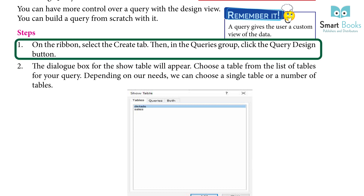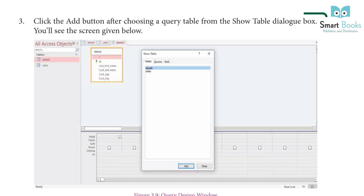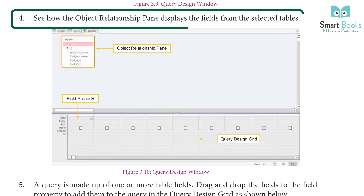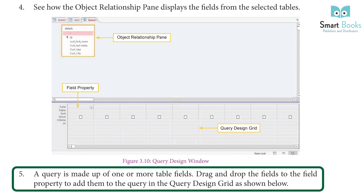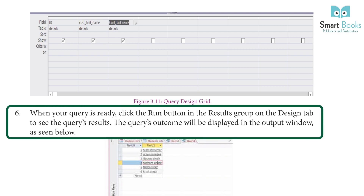Steps to create a query using Query Design: One, on the ribbon select the Create tab, then click the Query Design button in the Queries group. Two, the Show Table dialog box appears — choose a table for your query. Three, click the Add button after choosing the query table. Four, the object relationship pane displays the fields from the selected tables. Five, drag and drop fields to add them to the query design grid. Six, when ready, click the Run button in the Results group on the Design tab to see the results.